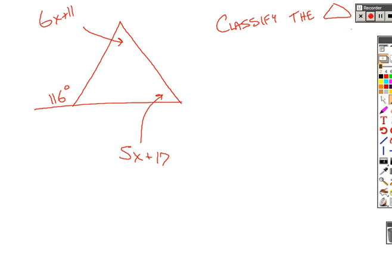Just look at one final example. Same thing, we want to classify the triangle. That's an exterior angle, 116. It must equal the sum of the other two. 5x plus 17, plus 6x plus 11.